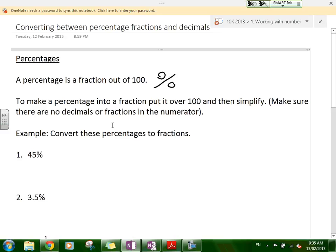This means a fraction out of 100. So to make a percentage into a fraction, put it over 100. So you place the percentage as a numerator with denominator 100 and then you simplify. Make sure there are no decimals or fractions in the numerator. So if you have something like 6.4%, you put 6.4 out of 100. You can put it into a calculator and it will do it for you, or you just multiply by 10 to remove the decimal point and then simplify the fraction.